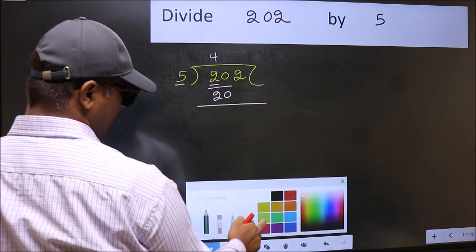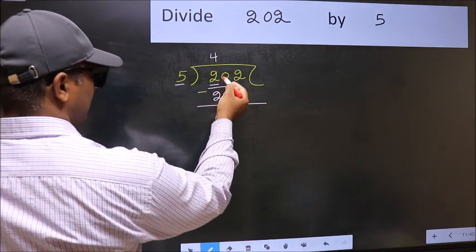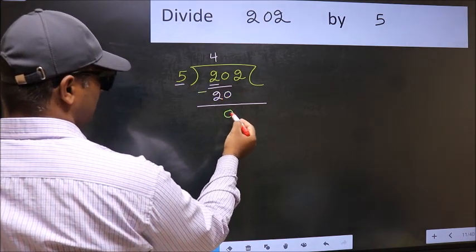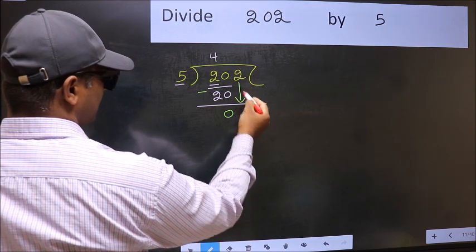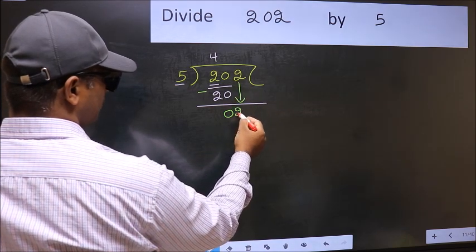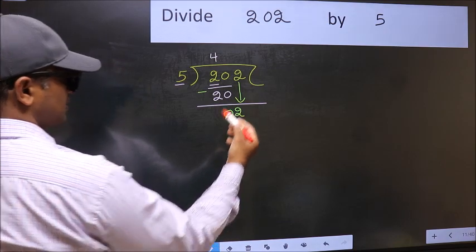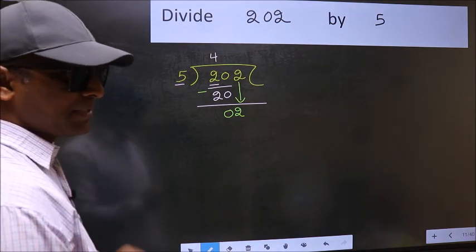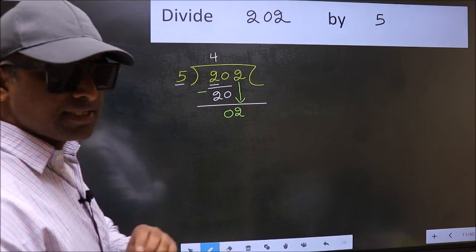Now you should subtract. 20 minus 20, 0. After this, bring down the beside number. So 2 down. After this step, the mistake happens. And the mistake is this.